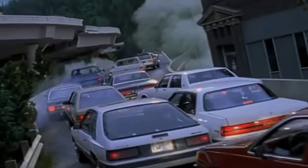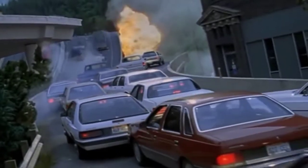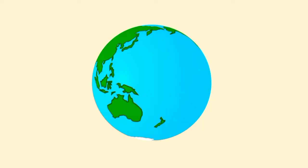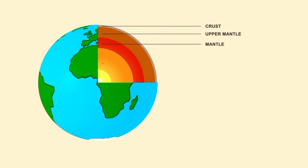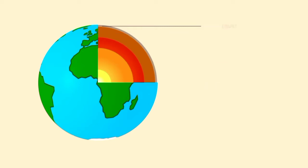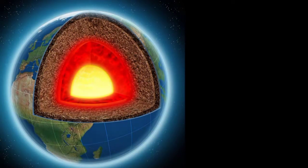We often considered earthquakes as a problem — a scary disaster we are always afraid of. But did you know that earthquakes also helped our scientists discover what's deep in the earth? The earth is made up of various components: the crust, the mantle, the outer core, and the inner core. Each part is further divided into more detailed parts that show its distinct features.